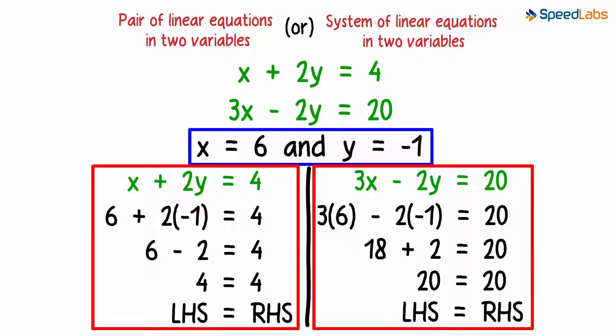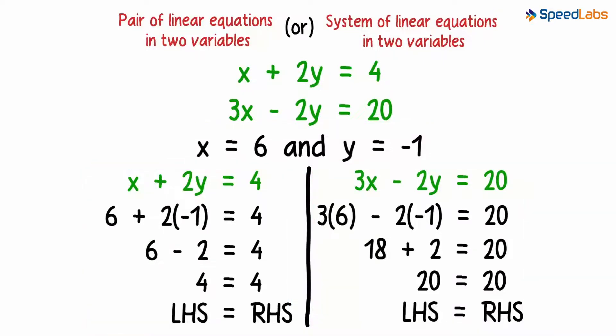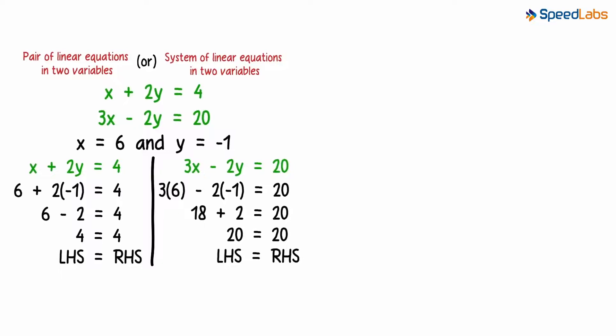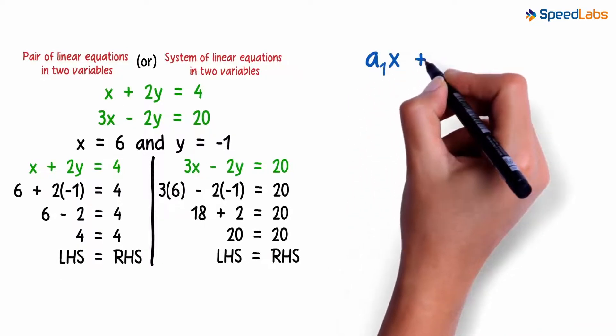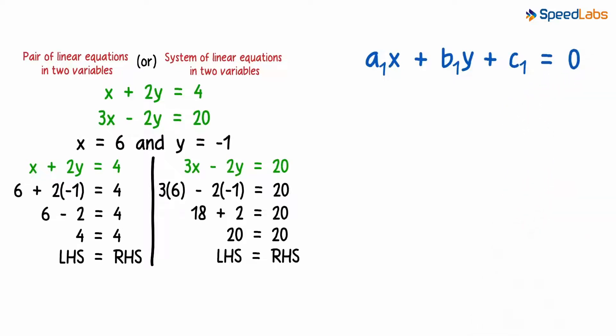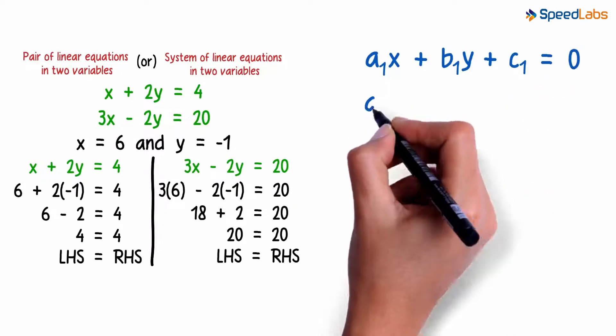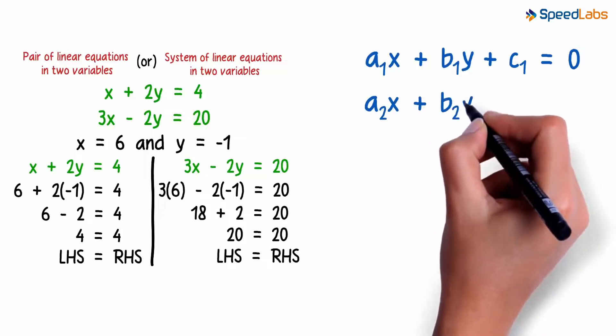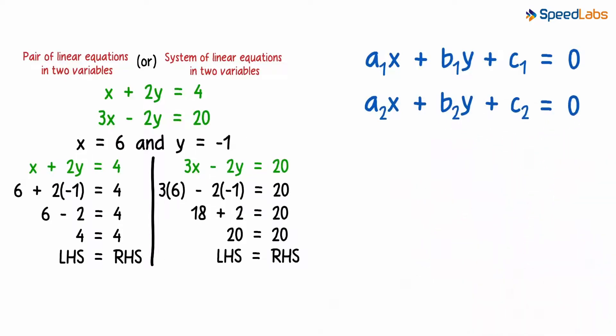So how would we write the general form of a pair of linear equations in two variables? Well, the first equation can be written as a1x plus b1y plus c1 equals 0. And the second one can be written as a2x plus b2y plus c2 equals 0. This will be the general form of a pair of linear equations in two variables.